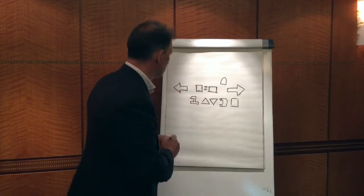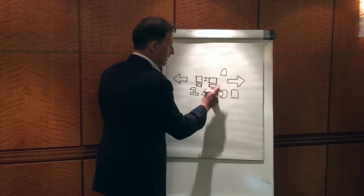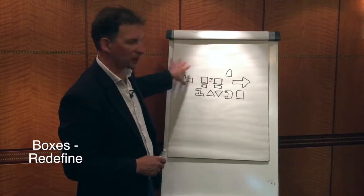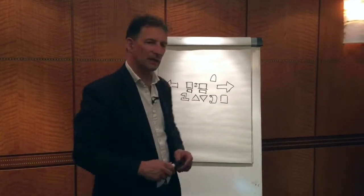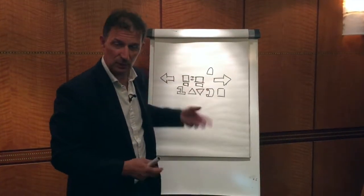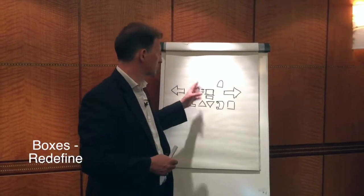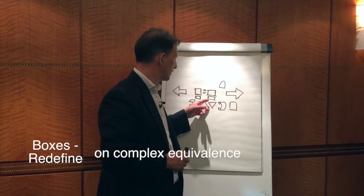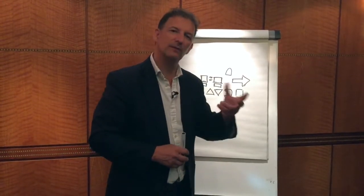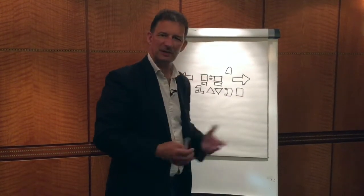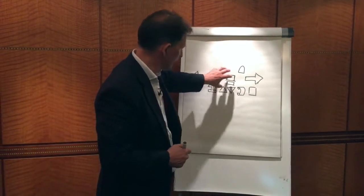Next, we have two boxes underneath the belief, which in Dilts' iconography refer to redefine — redefining on the side of the cause-effect, or redefining on the side of the complex equivalence. So 'if it's raining then it's wet' — just because it's fresh. We're redefining rain as fresh, changing the meaning by redefining it. On the other side, 'which means I can't go out' — we could redefine going out as 'live my life.' So just because it's fresh outside means that you can't live your life — redefining 'can't go out' as 'not living your life.'